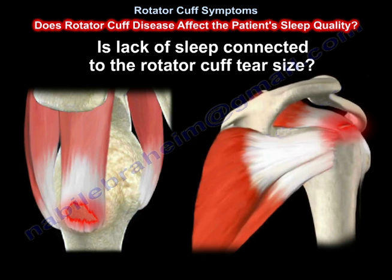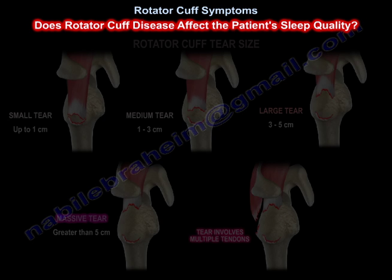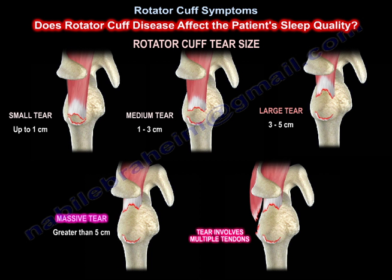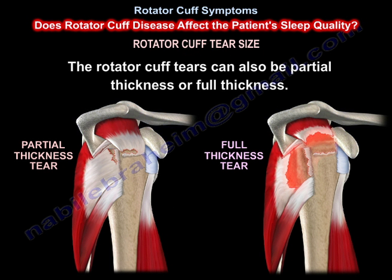These are the classic sizes of the tears: small tear up to one centimeter, medium tear one to three centimeters, large tear three to five centimeters, and massive tear greater than five centimeters, or a tear involving multiple tendons. Rotator cuff tears can also be partial thickness or full thickness.